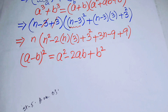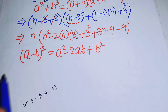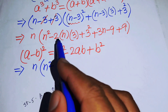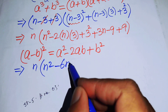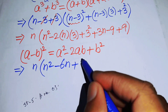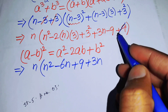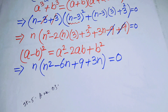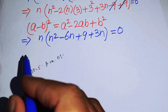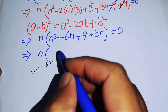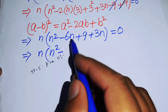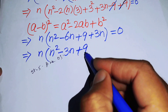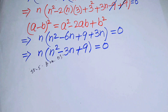After further simplification, combining minus 6n and plus 3n gives minus 3n, and plus 9 minus 9 cancels to zero. So we arrive at n times (n squared minus 3n plus 9) equals 0.